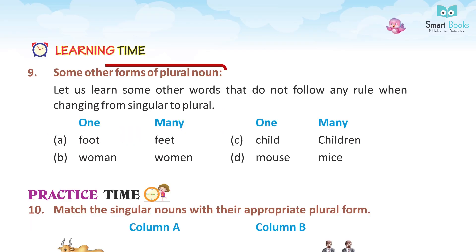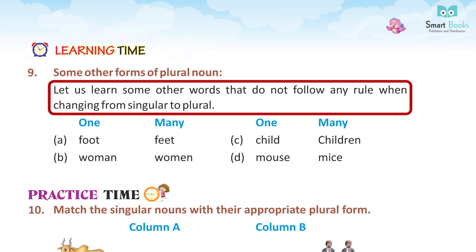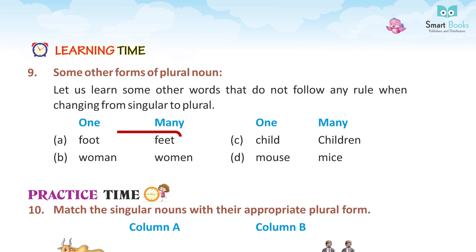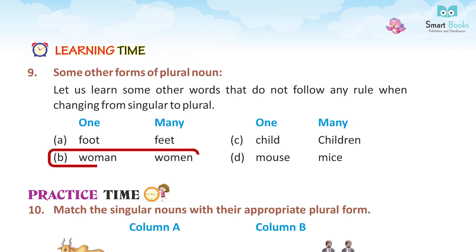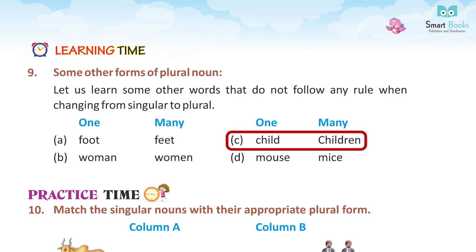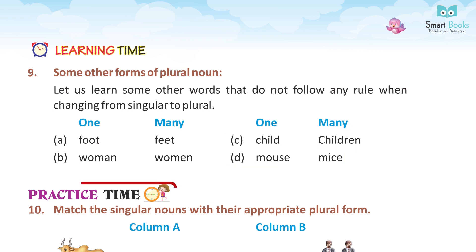Learning Time 9. Some other forms of plural nouns. Let us learn some words that do not follow any rule when changing from singular to plural. A. Foot — feet. B. Woman — women. C. Child — children. D. Mouse — mice. Practice Time 10.